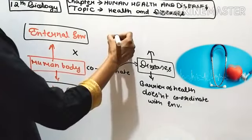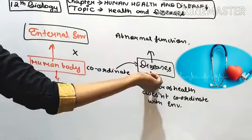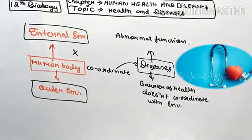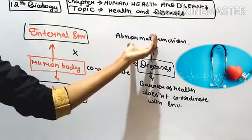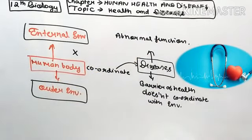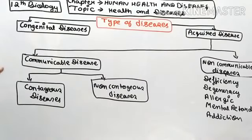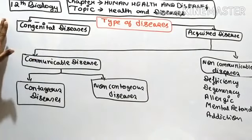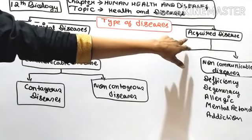Disease is the condition in which our body's immune system and health barrier do not coordinate with the environment, causing abnormal functioning and making the body unhealthy. On the basis of the abnormal functioning of the body, diseases are categorized into two categories: first, congenital disease — a disease which is present by birth — and second, acquired disease — a disease adopted from the environment, caused by some pathogen or some deficiency.